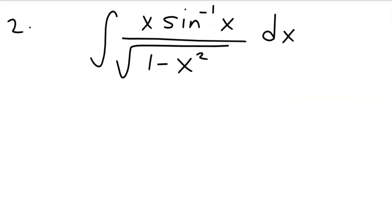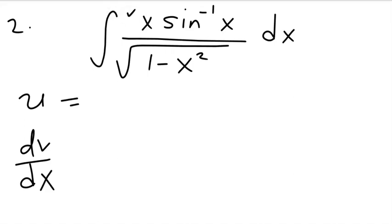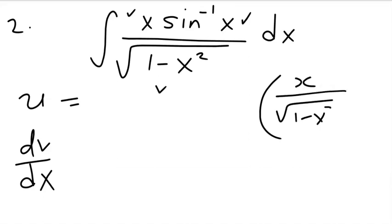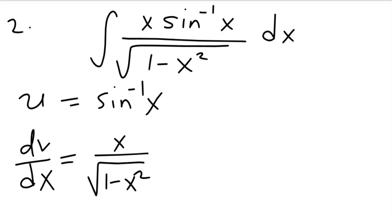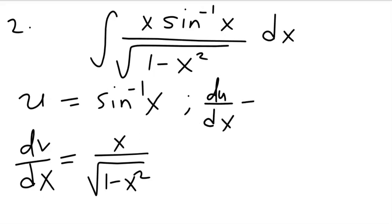Let's look at another example. Which function would we take to be u, and which one will we take to be dv/dx? We have x/√(1−x²) and arcsin(x). Judgment says it is easier to differentiate arcsin(x) than to integrate it, so we choose u = arcsin(x) and dv/dx = x/√(1−x²). That means du/dx = 1/√(1−x²).